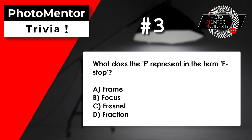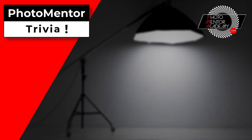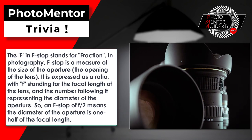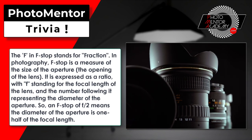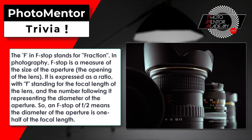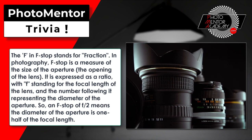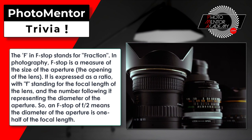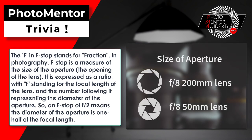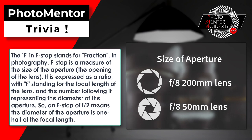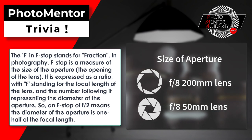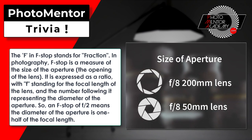The answer is D. The F in F-stop stands for fraction. In photography, F-stop is a measure of the size of the aperture, the opening of the lens. It is expressed as a ratio, with F standing for the focal length of the lens and the number following it representing the diameter of the aperture. So an F-stop of F2 means the diameter of the aperture is one-half of the focal length.